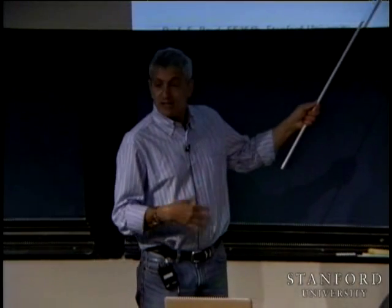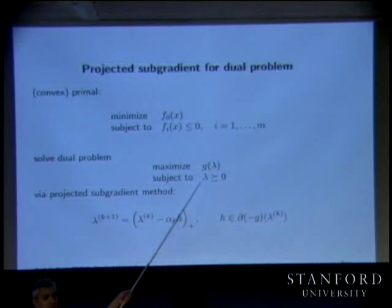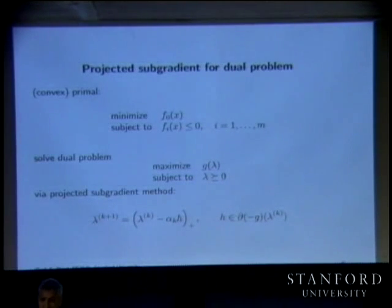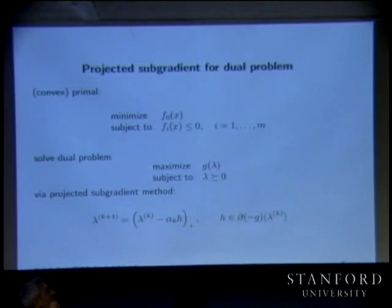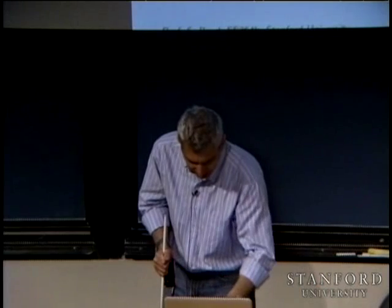You would calculate the optimal lambda star, then go back and get the minimizer of the Lagrangian with respect to x — call that x star. That will actually be the optimum of the primal problem.